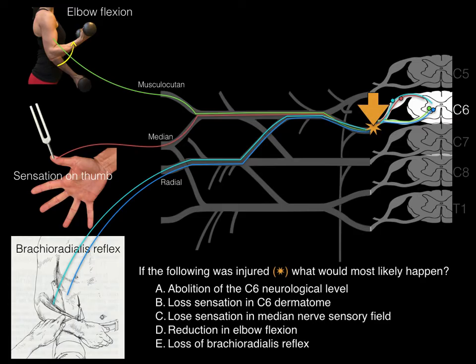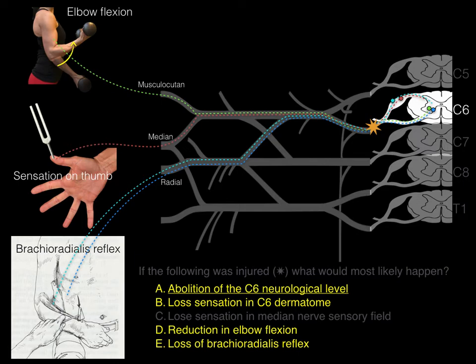If the injury was at the C6 ventral ramus, you would knock out the entire C6 neurological level — you cannot get motor neurons to the musculocutaneous nerve or through the radial nerve, and you lose sensory neurons from the brachioradialis muscle and the median nerve thumb field. However, the median nerve also serves the middle finger (the C7 dermatome), so you would still get some sensory neurons there — loss of sensation in the full median nerve sensory field would not be complete.